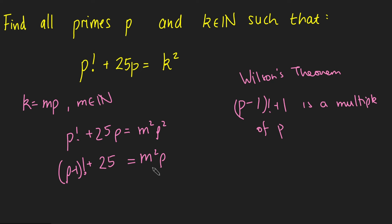And so if we sub that in here, or use this fact, if I write this left-hand side as p minus 1 factorial plus 1 plus 24 equals m squared times p, this part here is a multiple of p, this part here is a multiple of p, and so that tells us that 24 must be a multiple of p.